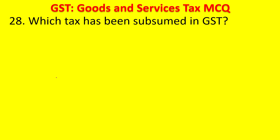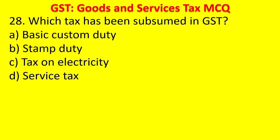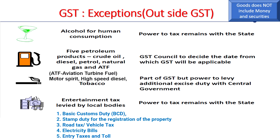Question 27: Which tax has been subsumed in GST? Options: Basic Custom Duty, Stamp Duty, Tax on Electricity, Service Tax. The answer is Service Tax — it has been subsumed in GST. Basic Custom Duty, Stamp Duty, and Tax on Electricity are not part of GST. Items outside GST include: alcohol for human consumption; 5 petroleum products — crude oil, diesel, petrol, natural gas, and ATF (aviation turbine fuel); tobacco; entertainment taxes levied by local bodies; Basic Custom Duty; stamp duty for property registration; road tax; vehicle tax; electricity bills; and entry taxes and tolls. Also note that goods does not include money and securities.